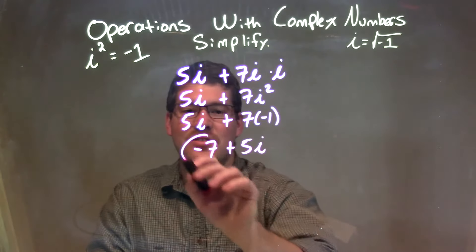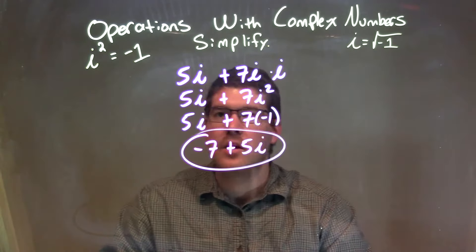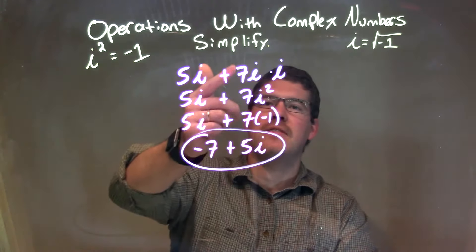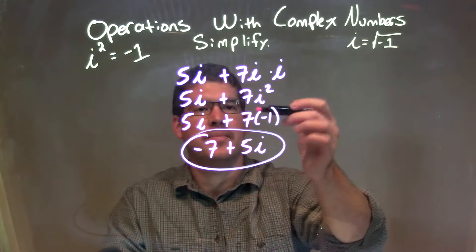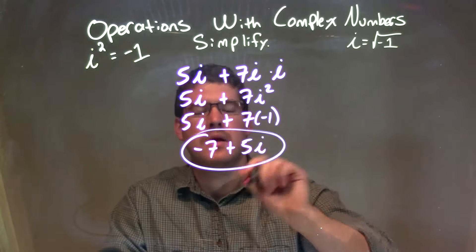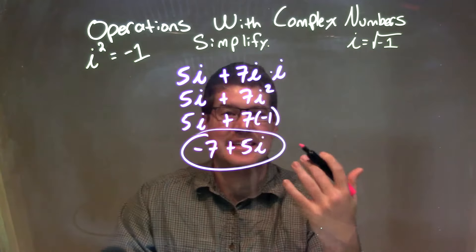So let's recap. We're given 5i plus 7i times i. I multiplied 7i times i first to get 7i squared. i squared is negative 1, so we have 7 times negative 1, which is negative 7.